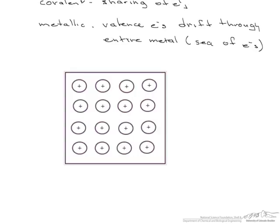Here's an example of what metallic bonding would look like. You have these ion cores in here that are positively charged because they don't have their valence electrons. And all throughout here you have these electrons, these negative charges that are floating throughout the entire metal.